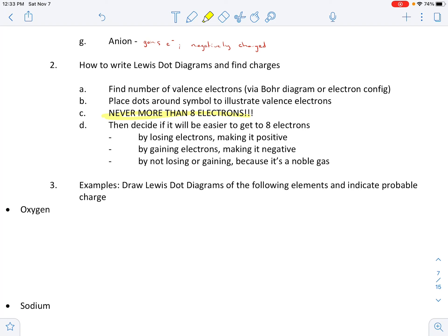Then we decide if it'll be easier to get to, how do we get to eight electrons? This is the charge part. How would it be easiest to get to eight electrons? Would it be easiest to lose electrons or gain electrons? If they lose electrons, it makes it positive. And remember, that's our cation. If it gains electrons, that's our anion. And then our noble gases will not gain or lose because they have a full valence shell.